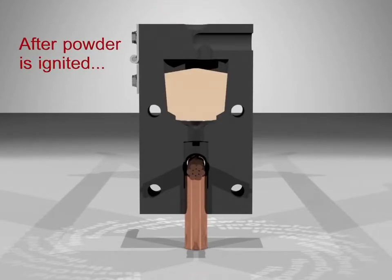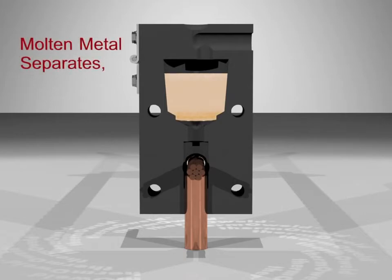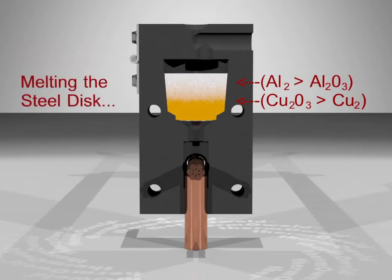The spark from the flint igniter causes a reaction within the weld metal, melting and separating the metals. The molten metal melts the steel disc, allowing it to flow into the weld cavity, creating a permanent connection.